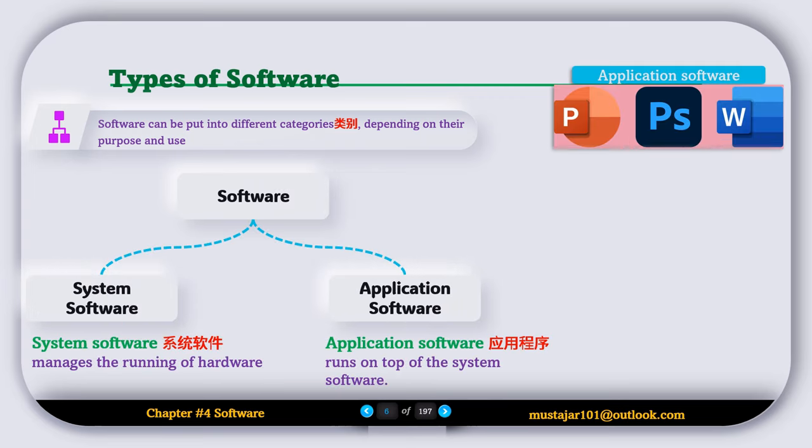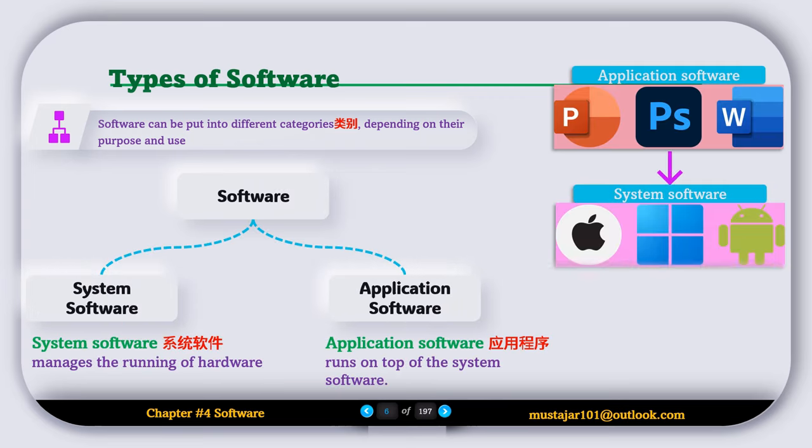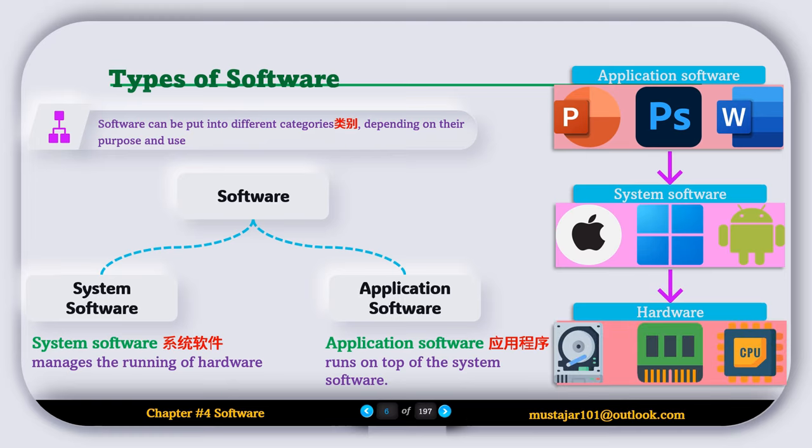Software can be put into different categories depending on their purpose and use. We can divide software into two main categories: the first is system software and the second is application software. System software manages the running of hardware, while application software runs on top of the system software.